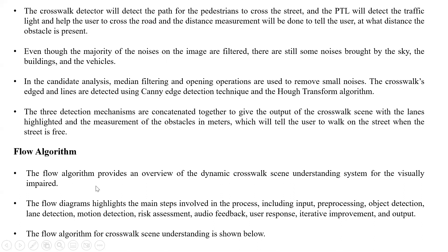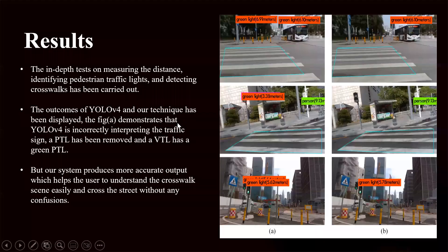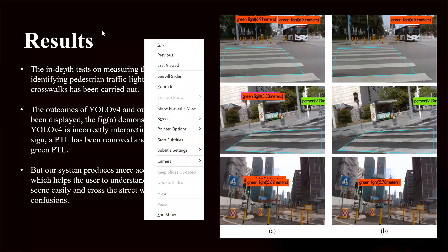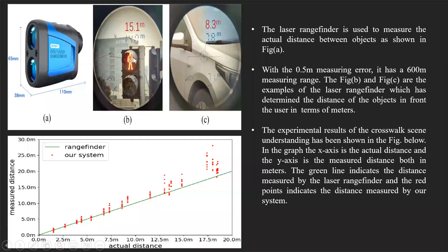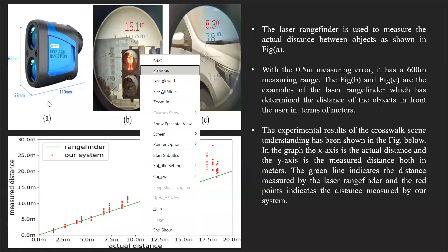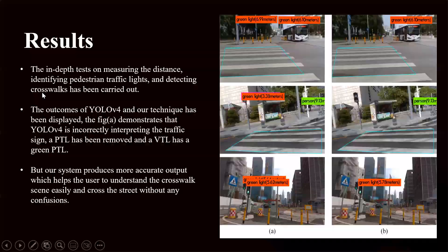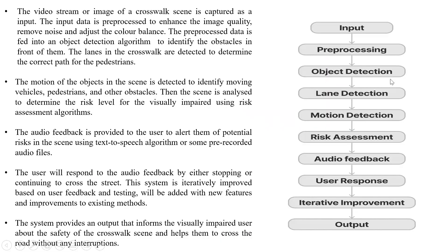Next is the flow algorithm. The flow algorithm provides an overview of the dynamic crosswalk scene understanding system for the visually impaired. It highlights the main steps involved in the process, including input, pre-processing, object detection, lane detection, motion detection, risk assessment, audio feedback, user response, iterative improvement, and output.